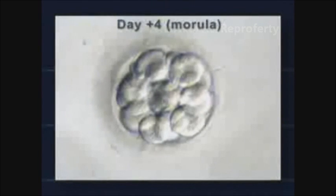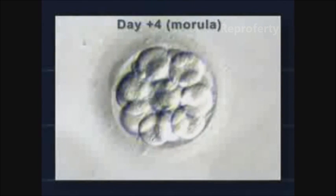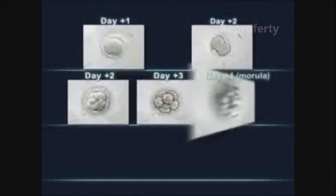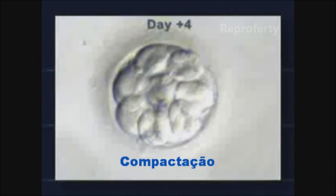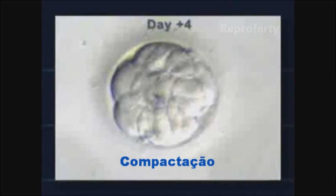On day four, the embryo divides a number of times, becoming a morula. This is when it begins to become compact.